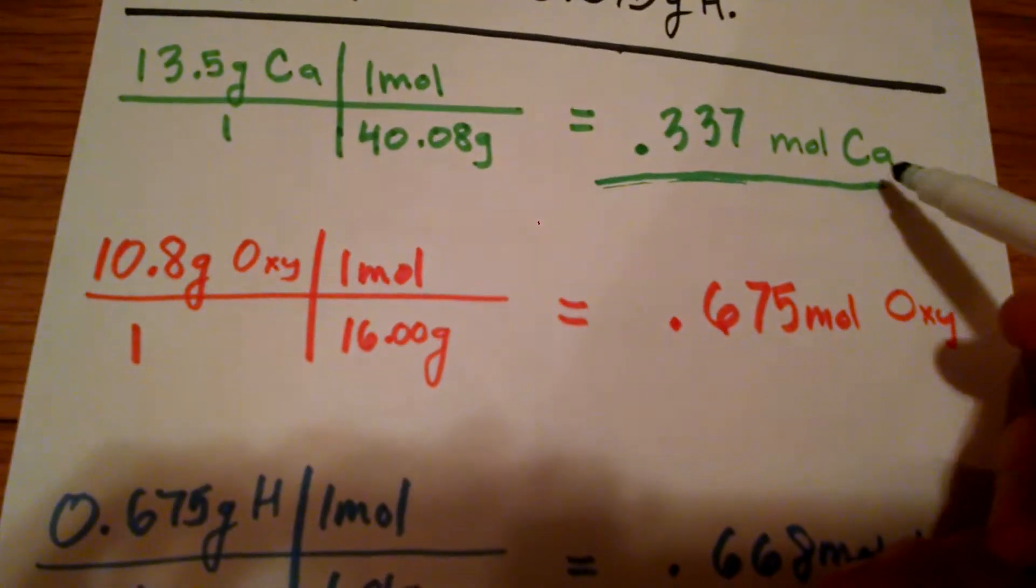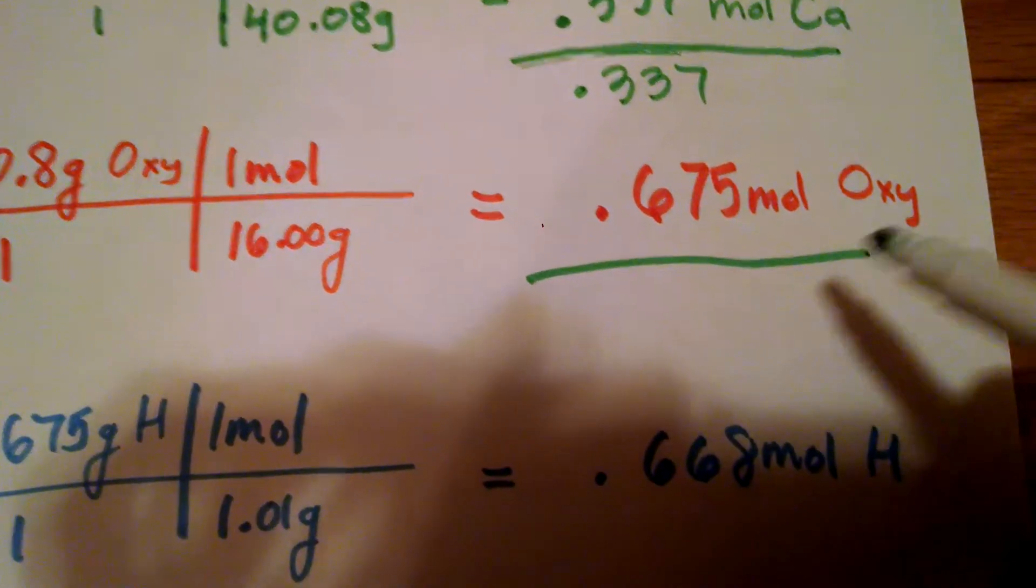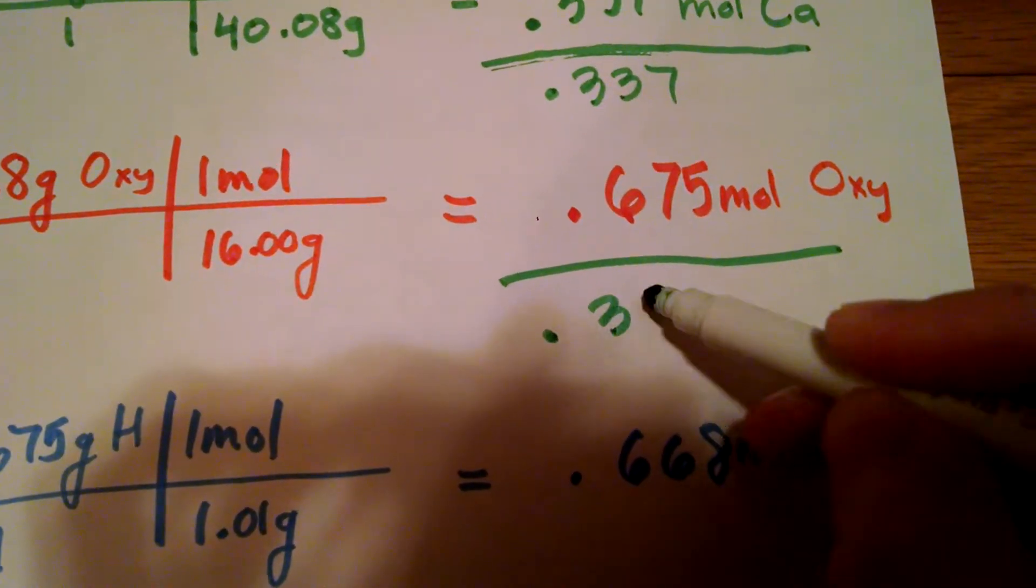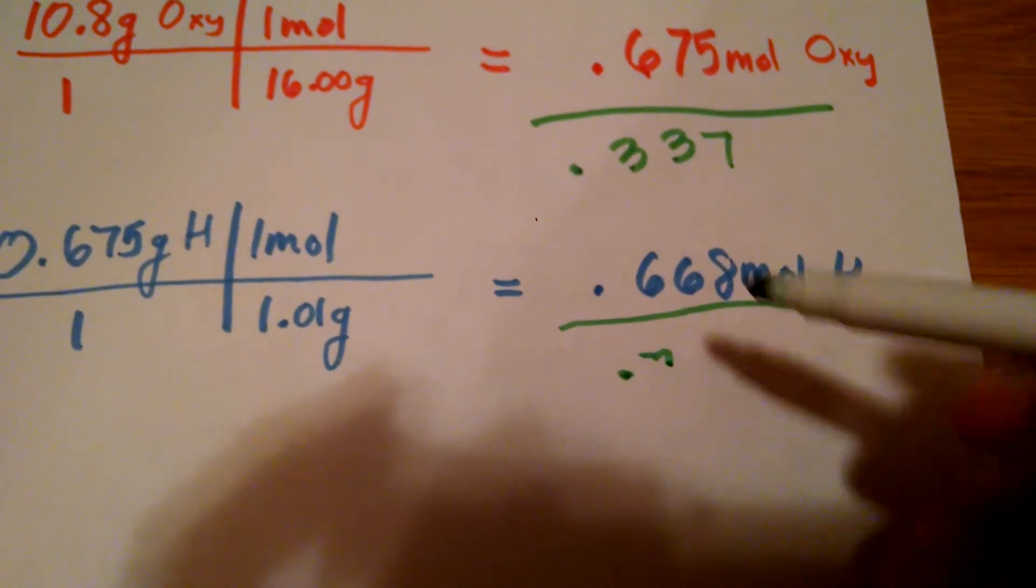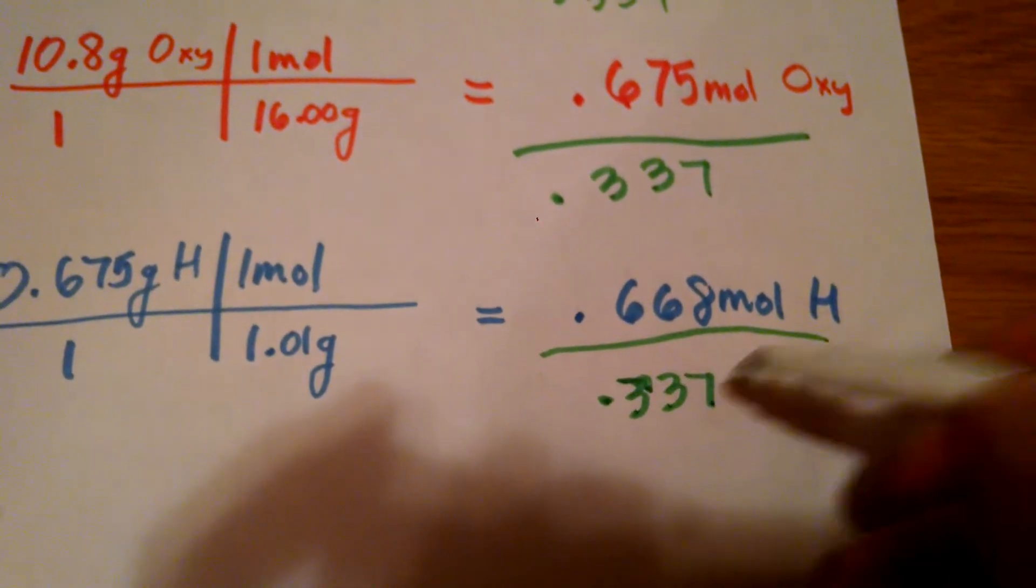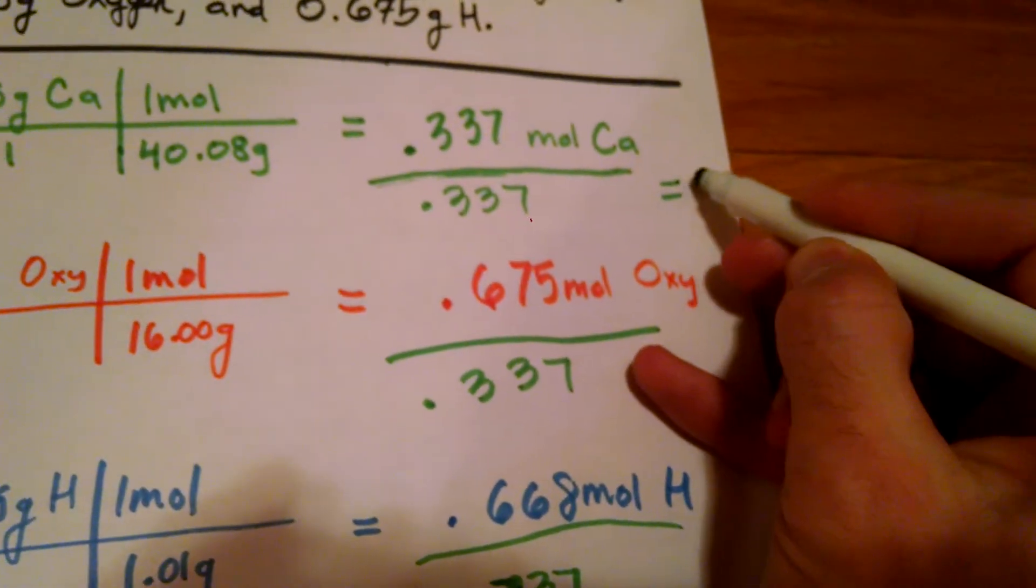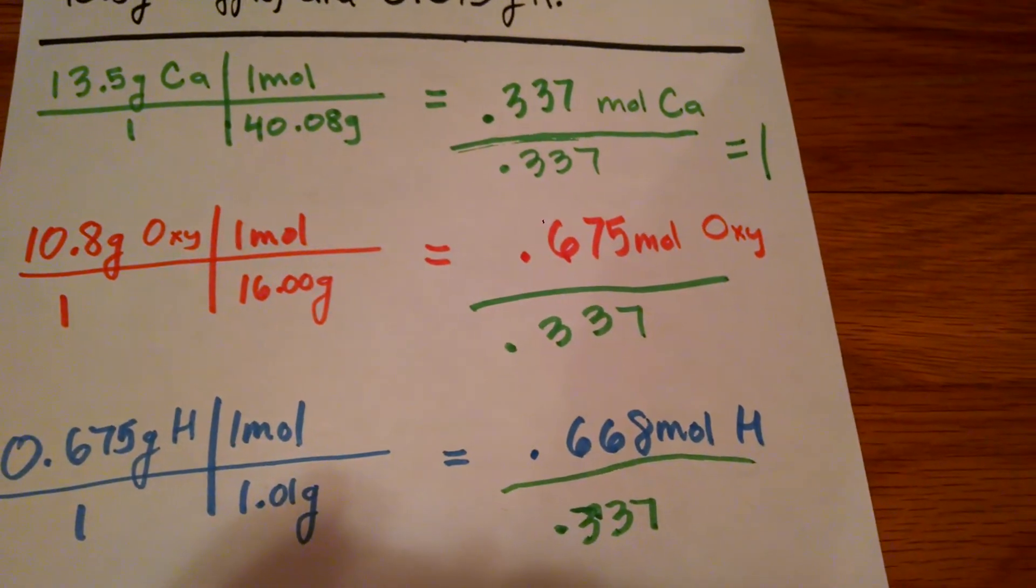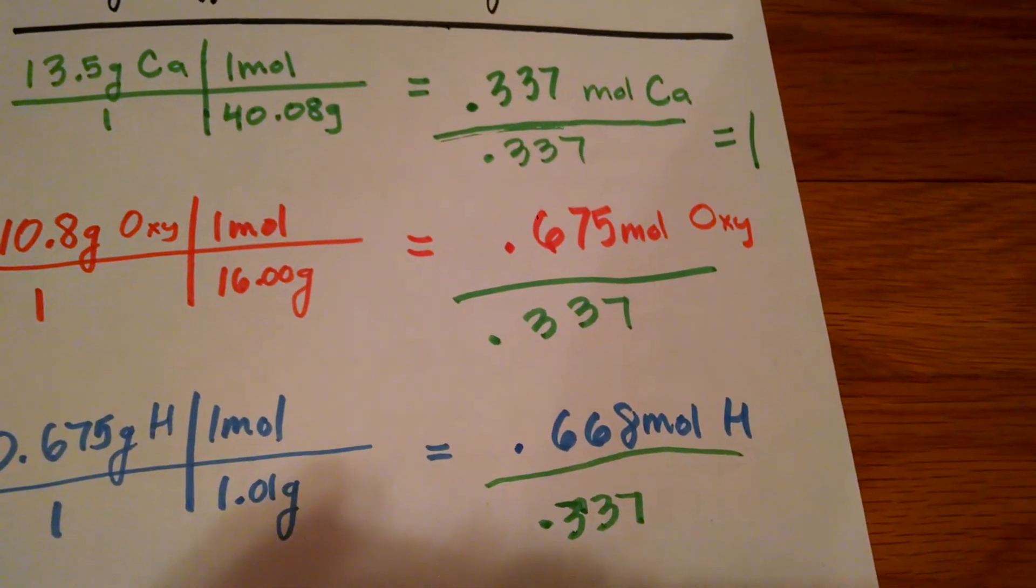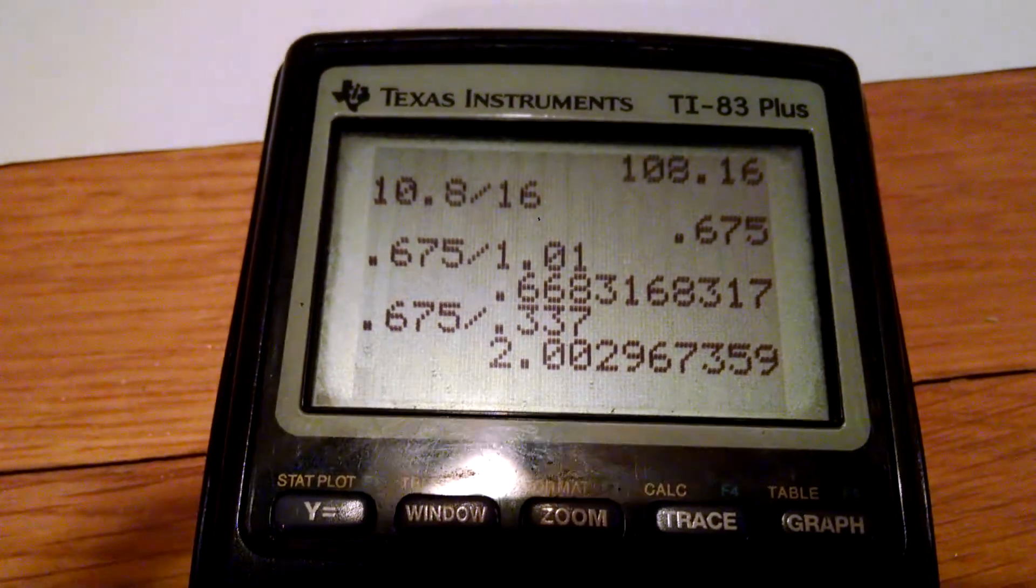So we're going to divide each—oh it is hard to write when you've got a camera or a phone right in front of you. More difficult than it seems. So we're going to divide each of these by 0.337. Now this obviously is going to be 1. This one, if we plug it into your calculator, you get 2.003.